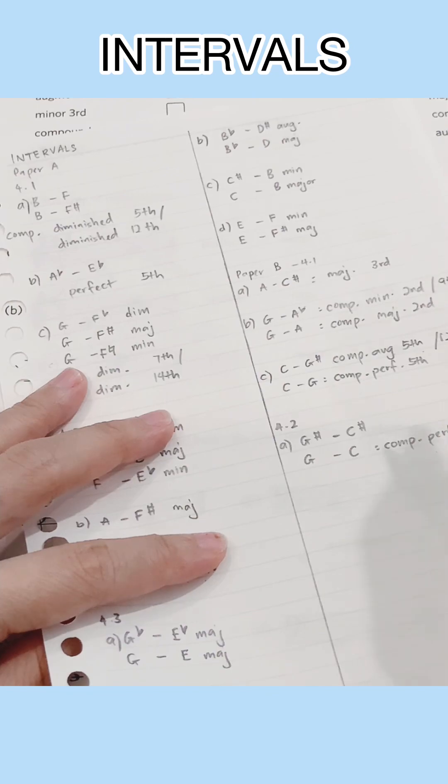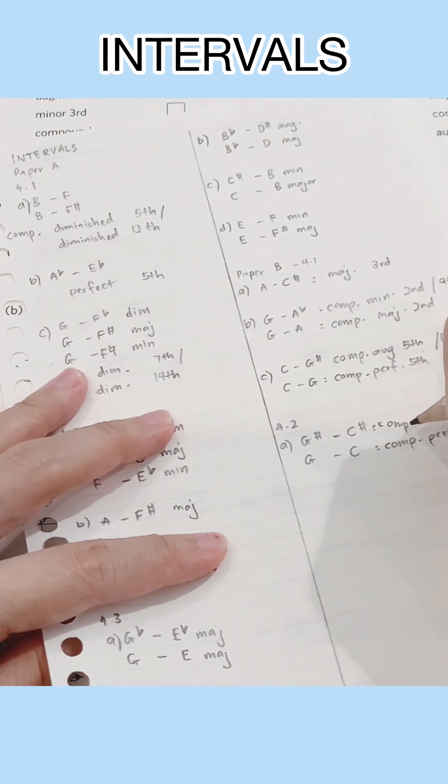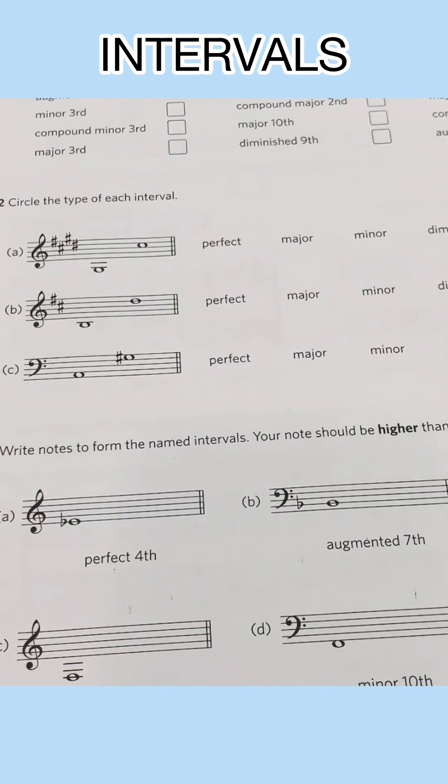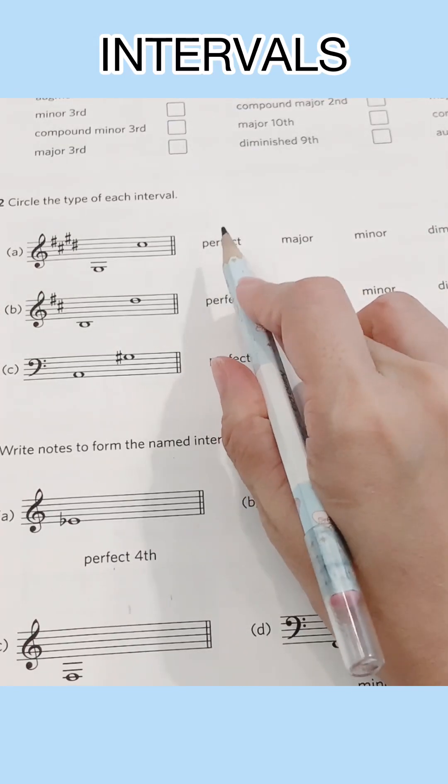By the same logic, we raise the semitone from G to G sharp and from C to C sharp, we'll get the same distance which is also a perfect fourth. So the answer would be perfect.